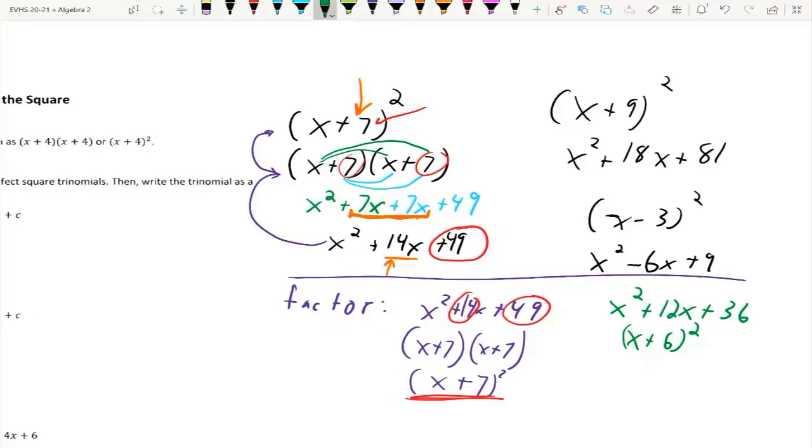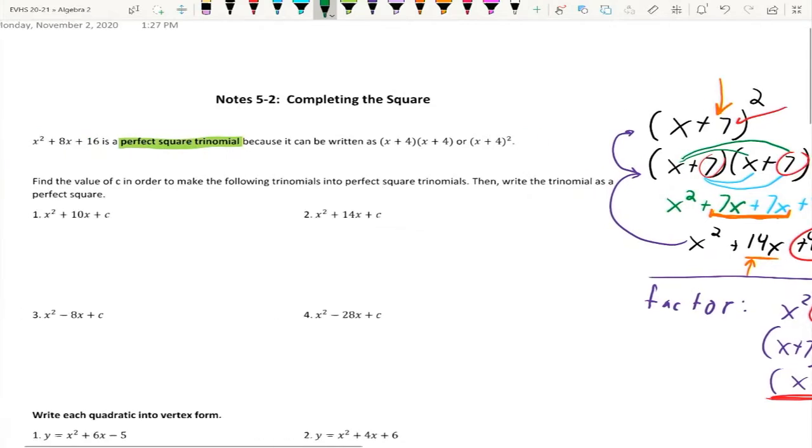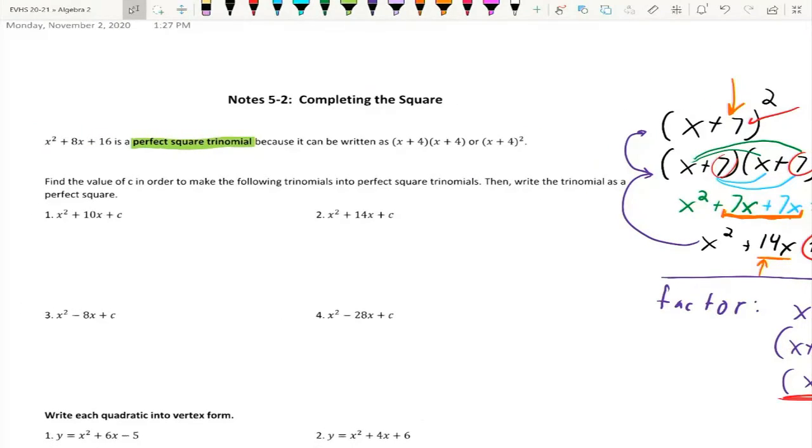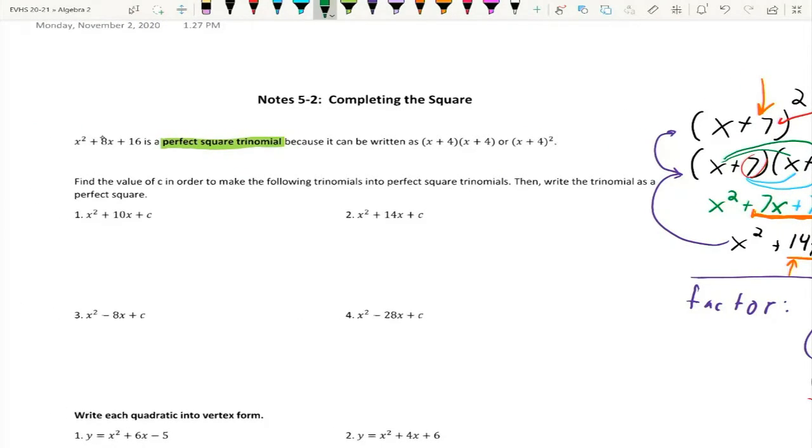Now we covered that in Algebra 1. We covered that a little bit earlier this year. But now we're actually going to really start using that quite a bit. So you can see here's my example here. Half of 8 is 4. The square root of 16 is 4. So it ends up being (x + 4)².